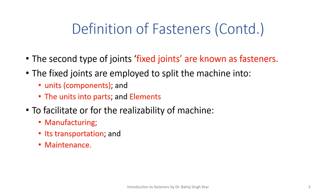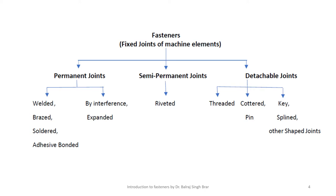Fasteners — fixed joints of machine elements — are classified into mainly three categories: permanent joints, semi-permanent joints, and detachable joints. Permanent joints include welded, brazed, soldered, adhesive bonded, interference fit, and expanded joints. Semi-permanent joints include riveted joints. Detachable joints include threaded joints, cotter joints, pin joints, keyed joints, splined joints, and other shaped joints.